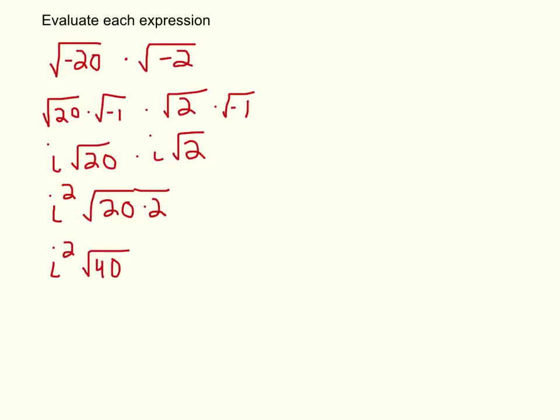Well, we know what i squared is. i squared is negative 1. So negative 1 times the square root of 40 is just negative square root of 40. Alright, so now we've got the square root of 40. What I'm going to do is I'm going to take that and I'm going to bring it right back up top here.